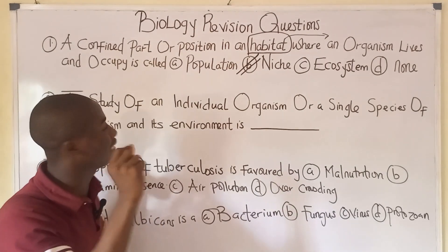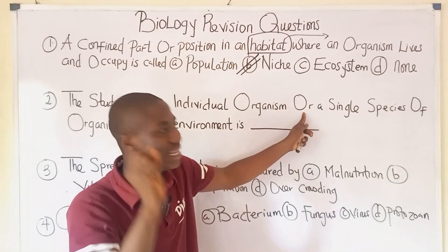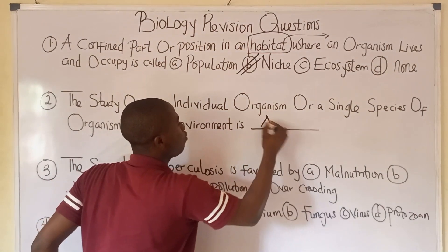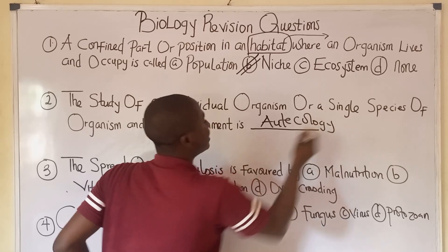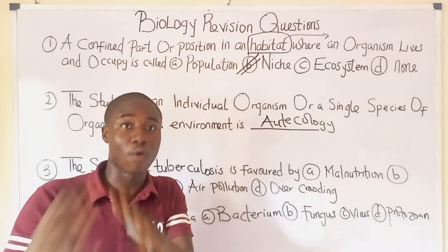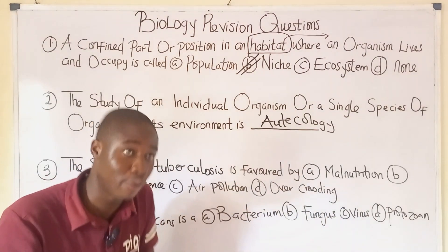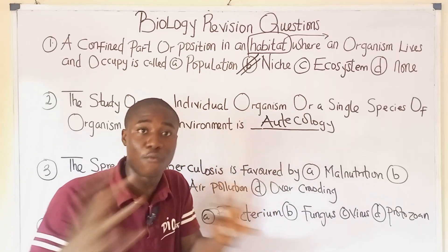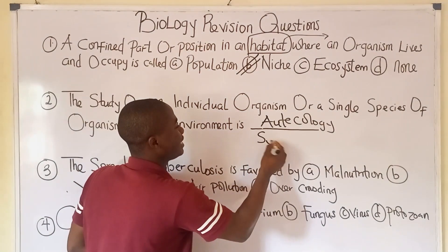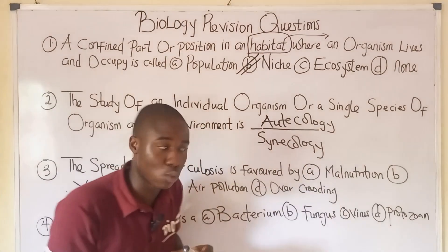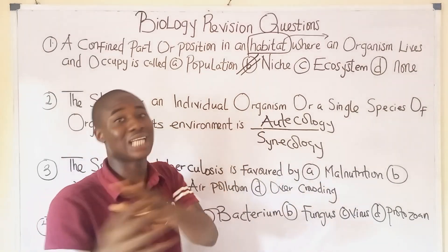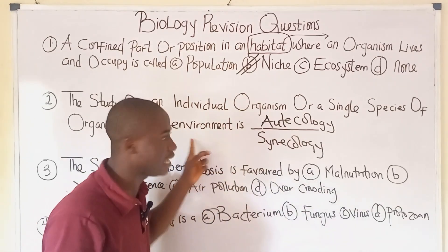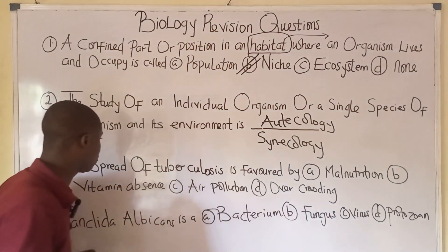Question two: the study of an individual organism or a single species of organism and its environment is called autecology. When we take one group of organisms and study them in relation to their environment, we call it autecology. But when we study groups of different species of organisms in relation to their environment, that is called synecology. So autecology involves one particular species studied in an environment, while synecology involves different species studied in an environment.